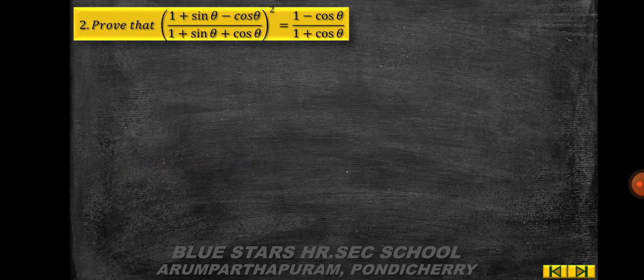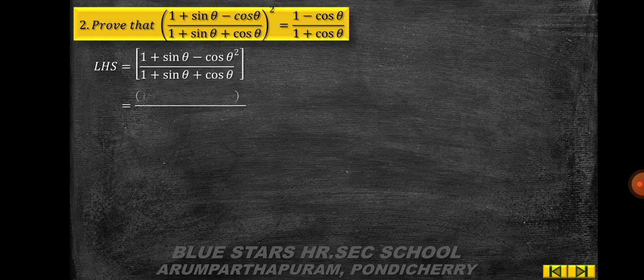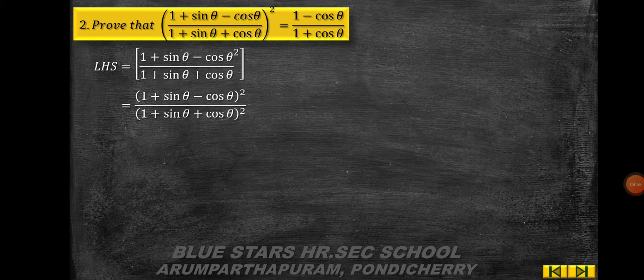Problem 2: prove that [(1 + sinθ − cosθ) / (1 + sinθ + cosθ)]² = (1 − cosθ) / (1 + cosθ). Choose the left-hand side: [(1 + sinθ − cosθ) / (1 + sinθ + cosθ)]². Taking the square on numerator and denominator separately gives (1 + sinθ − cosθ)² / (1 + sinθ + cosθ)².